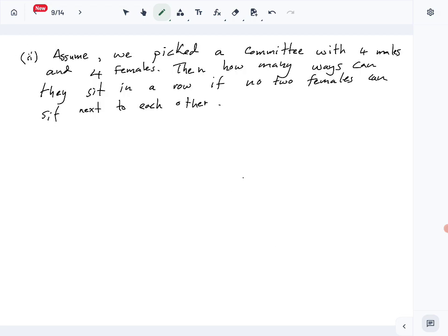Now let's look at the second part of this question. We are assuming we picked a committee with 4 males and 4 females. They are asking us to find the number of ways they can sit in a row if no two females can sit next to each other.